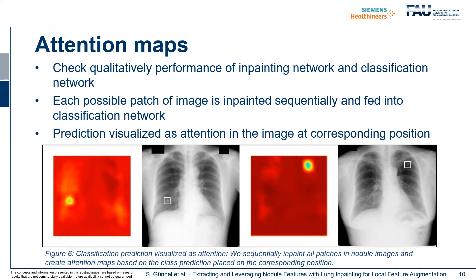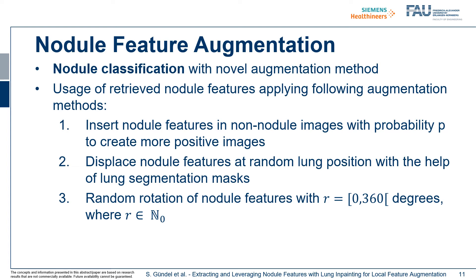The existing nodule collections may lead to many different ideas. We are focusing on nodule classification, and in general we defined three different contributions. The first one is to insert the nodule features into non-nodule images with a certain probability p to create more positive image features and to deal with class imbalance. The second one is to displace the nodule features at random lung positions with the help of a lung segmentation mask. The last one is to apply random rotation of the nodule features from 0 to 360 degrees.